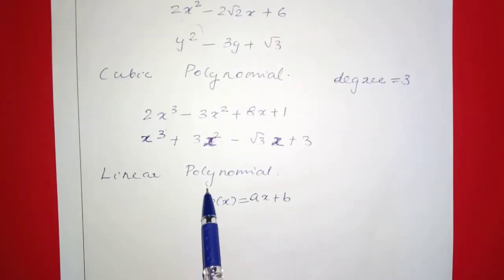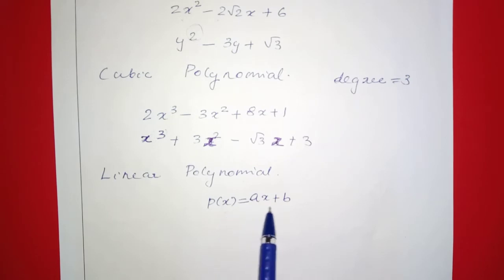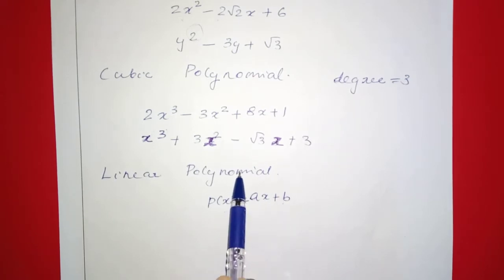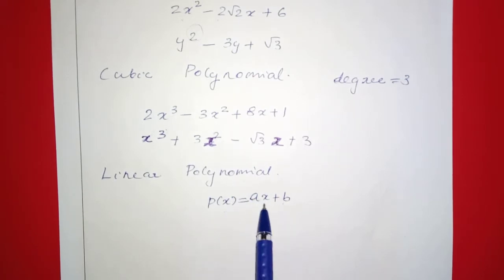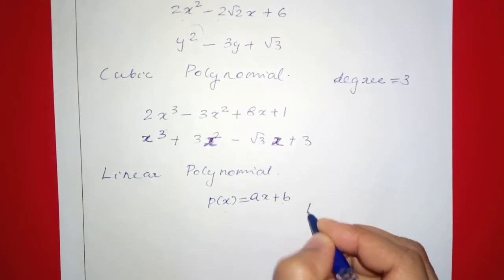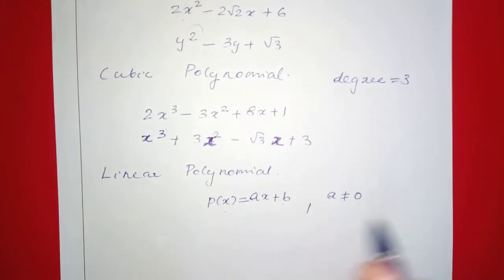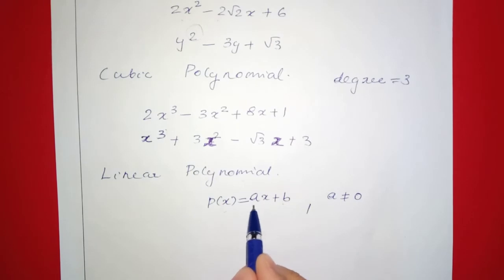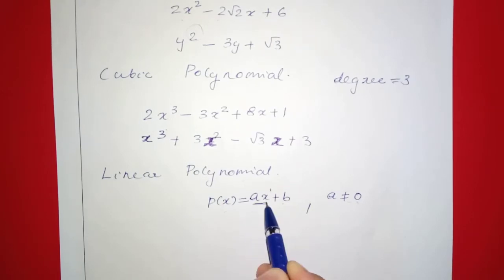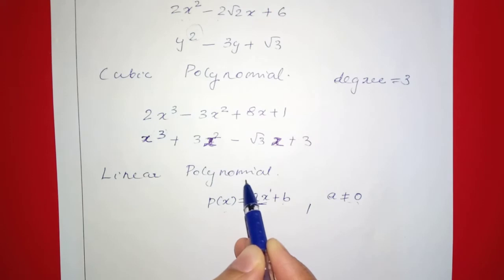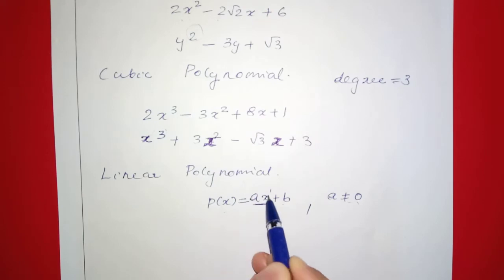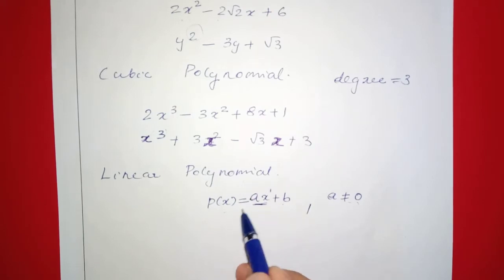The general form of the linear polynomial is p of x equal to ax plus b, with the condition that a is not equal to 0. If a is not equal to 0, then the term ax exists, making it a linear polynomial. Here a and b are real numbers.